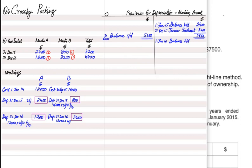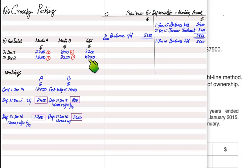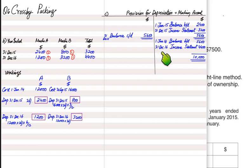In 2016, we again add up both machines' depreciation: Machine A (1,200) and Machine B (3,200) total 4,400. The entry remains the same — debit Income Statement, credit Provision account. Opening provision at the start of 2016 is 5,600; adding 4,400 gives a total of 10,000.